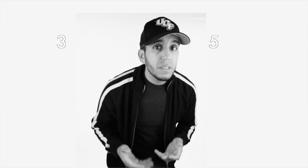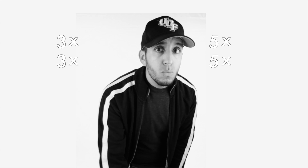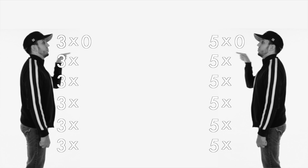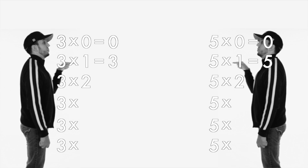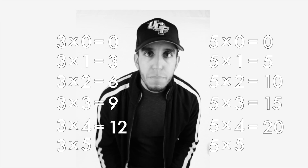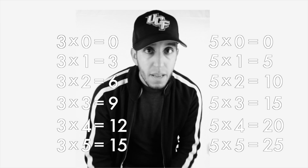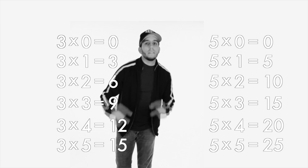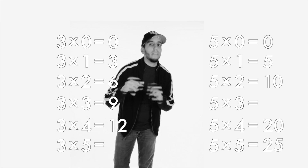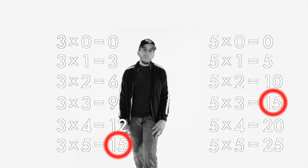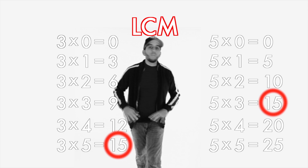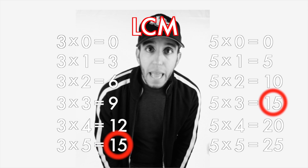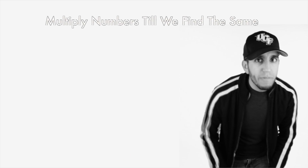Number, what to do? Multiply you through and through — by zero, one and two, three and four, maybe more — till we find a common one. That's the smallest, not the largest. Circle them and then we're done. That's how we get the LCM.